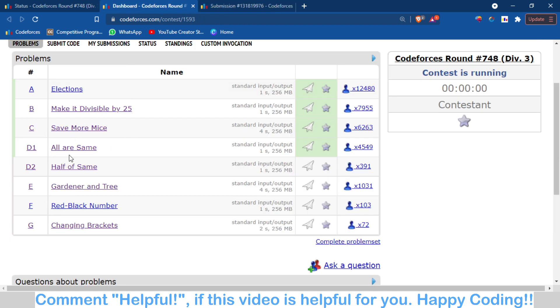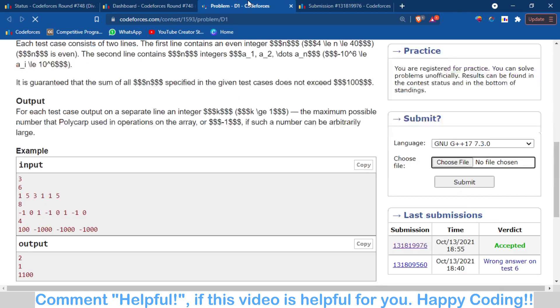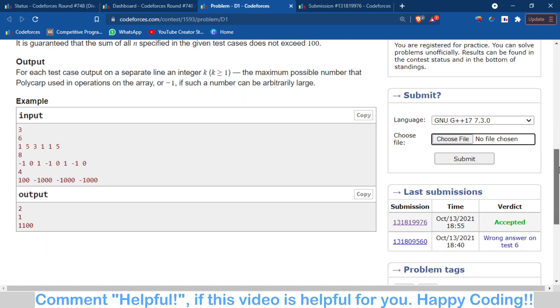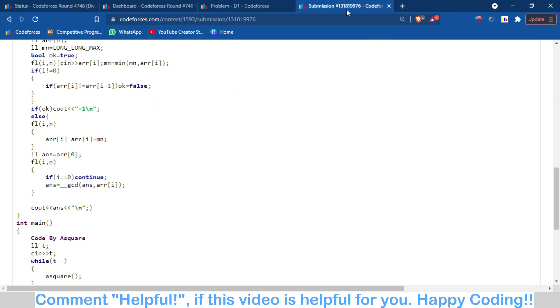Else I have first found the minimum of these numbers, the minimum of all the numbers. Then the difference of all the numbers with the minimum number of the array, and the GCD of that difference is our answer.